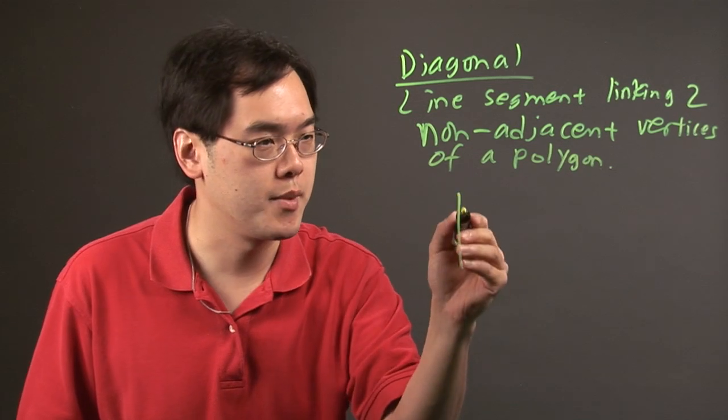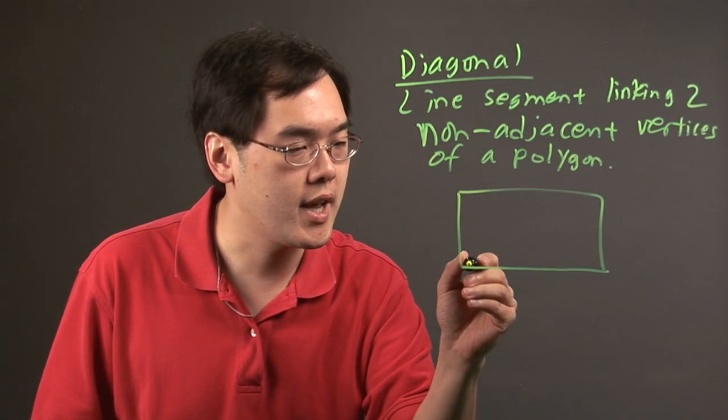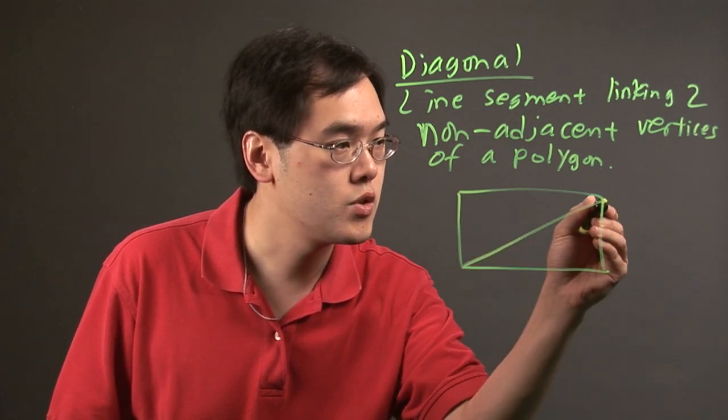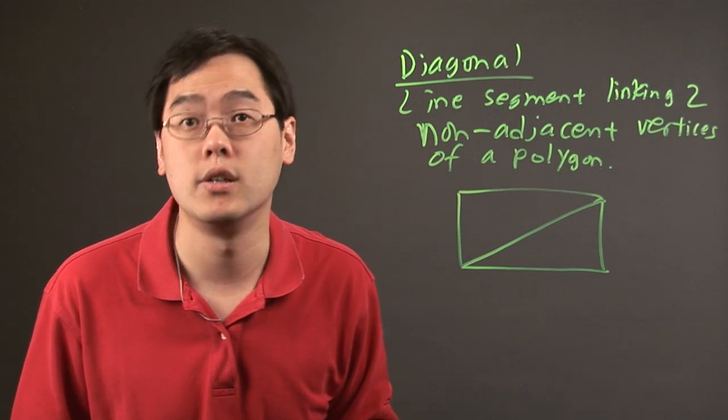So if you have a rectangle, for example, you want to draw a line segment from this vertex to this vertex. Now remember, the vertices cannot be next to each other, so this will qualify as a diagonal. Is that the only one?